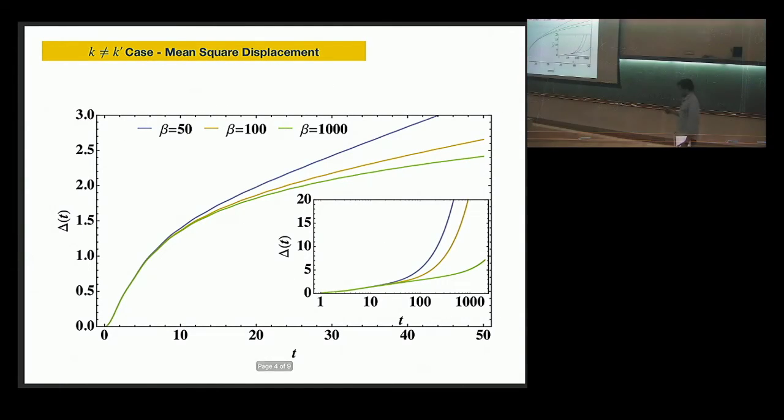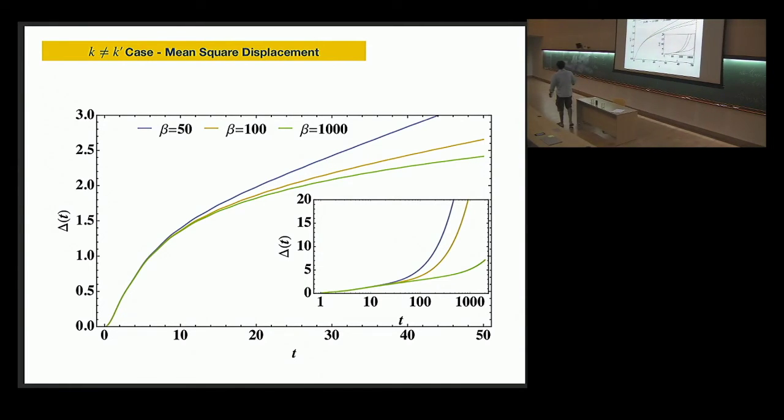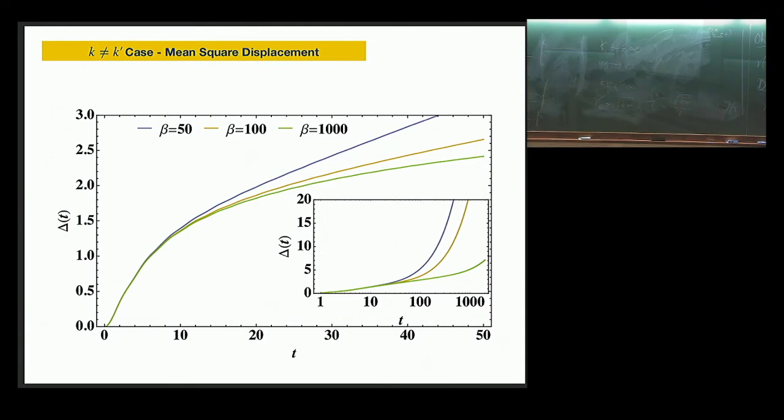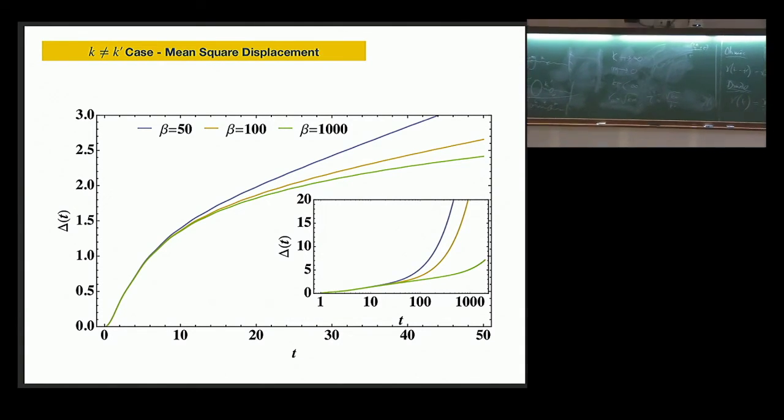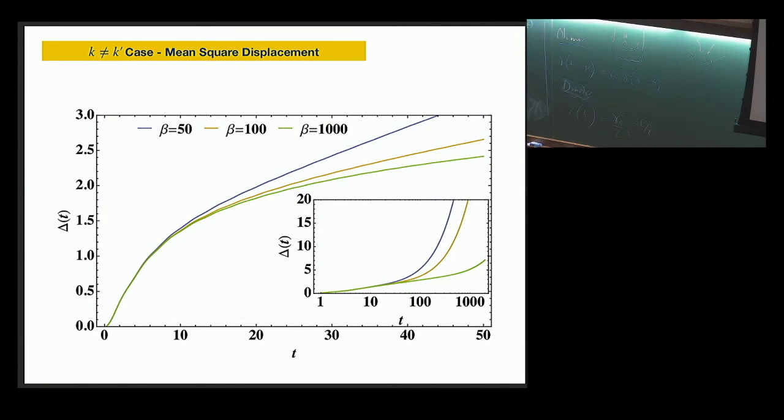So the answer is this. So people have already studied in this simple models that in quantum, at zero temperature when the fluctuation is, there is no thermal fluctuation but only the quantum fluctuation, people have showed that this goes as log t instead of t.